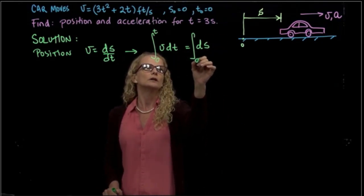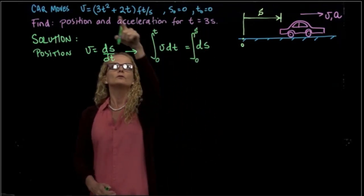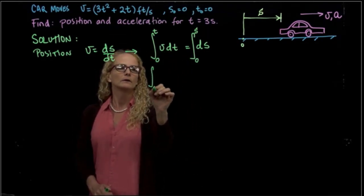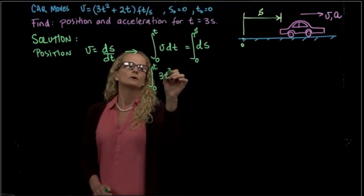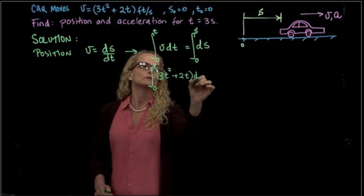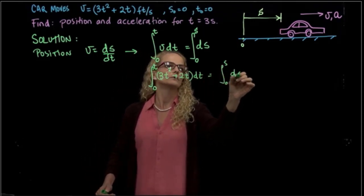Which is 0 and s. So we introduce our expression that we were given for the velocity. And we have 3 times time squared plus 2t differential of time equals the integral of the position.